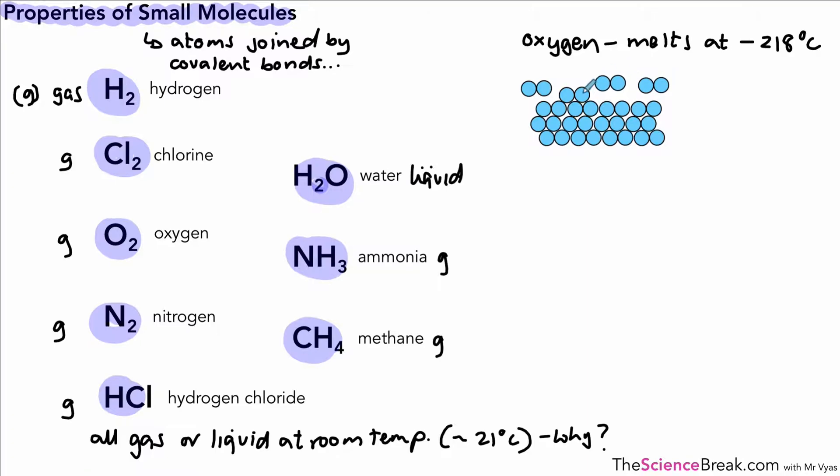Now if we warm it up or raise this temperature above minus 218, it will melt and that means the molecules will move apart. So the molecules move apart when it melts, when its temperature rises above minus 218 degrees centigrade.